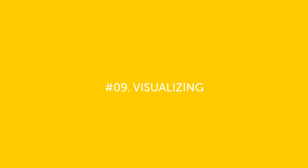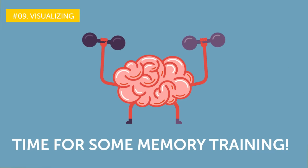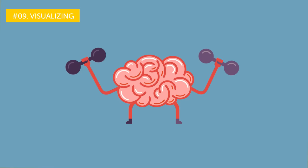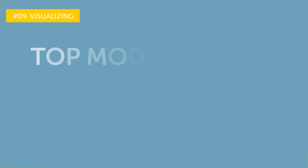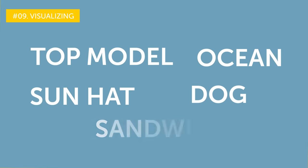Number 9. Visualizing. Time for some memory training. It is an essential part of any brain workout. Can you quickly memorize the words you see on your screen? Top model. Ocean. Sun hat. Dog. Sandwich.